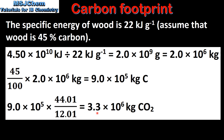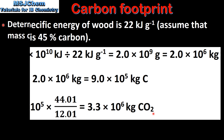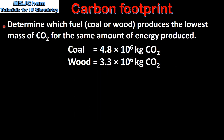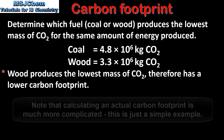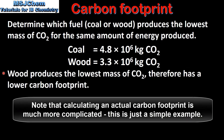This gives us 3.3 times 10 to the 6 kilograms of carbon dioxide. Finally, we'll determine which fuel produces the lowest mass of carbon dioxide for the same amount of energy produced. By comparing the mass of carbon dioxide produced, we can see that wood produces the lowest mass of carbon dioxide and therefore has a lower carbon footprint.